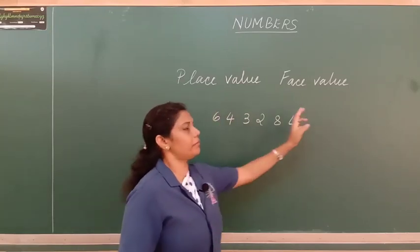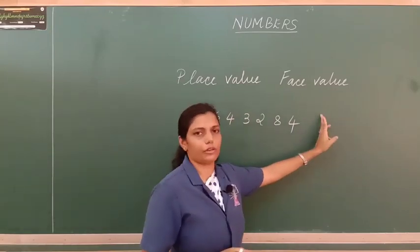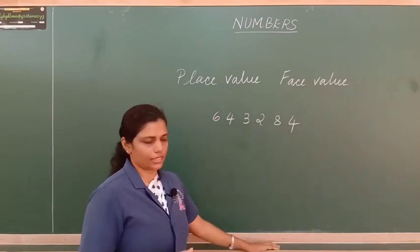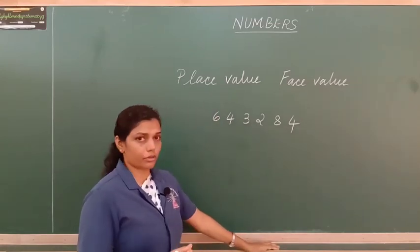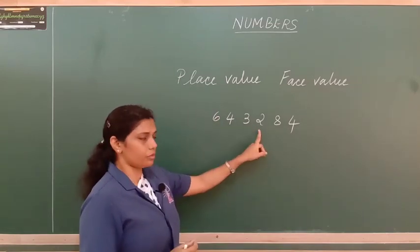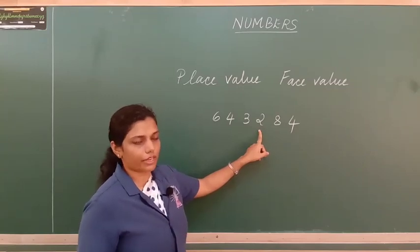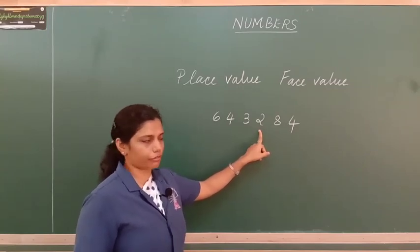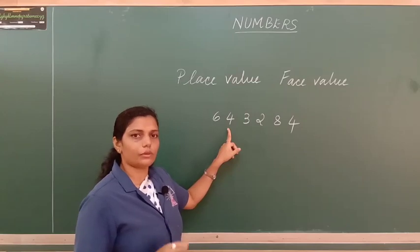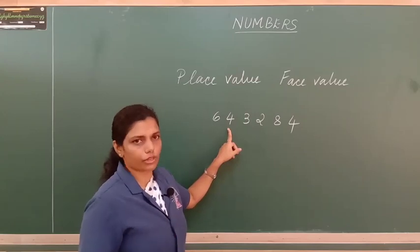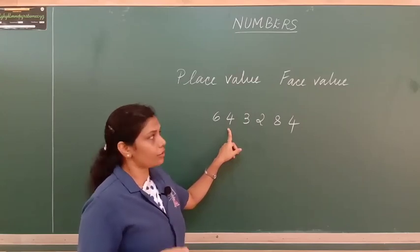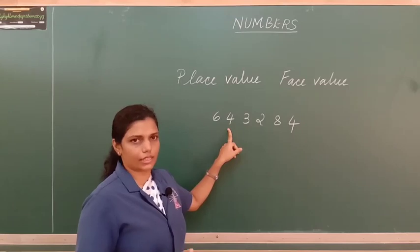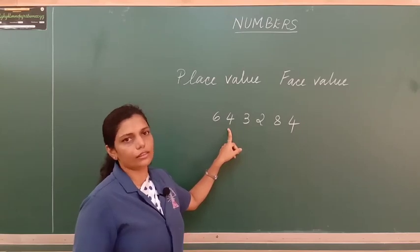Then what do we mean by face value? Face value is nothing but the digit itself. For example, 2 has a face value of 2, and 4 has a face value of 4. So face value is simply the digit itself in the number.